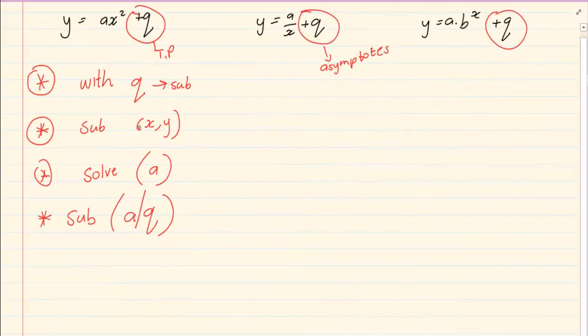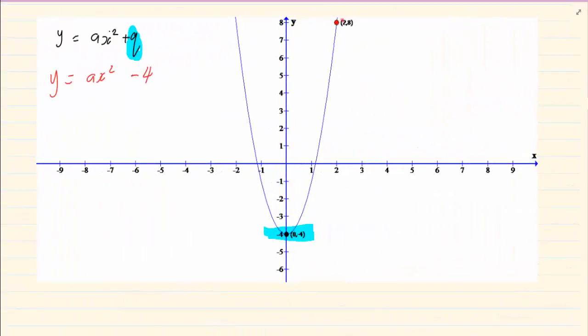The next step is we're going to substitute any random point. So what point have they given us? They've given us 2 and 8. We now substitute 2 and 8 into x and y. So we have 8 equals a, open brackets, 2 squared minus 4.